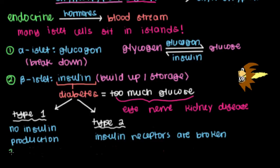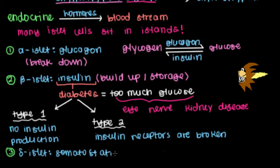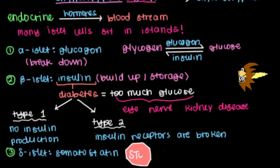The third type of islet cell in the pancreas is the delta islet cell. Delta cells release a hormone called somatostatin, which is essentially the major 'party pooping' hormone of the endocrine pancreas — its main job is to stop the effects of all the other active hormones, including glucagon, insulin, and other GI tract hormones like cholecystokinin. Somatostatin goes in and causes the effects of those hormones to stop.